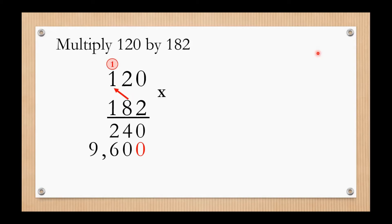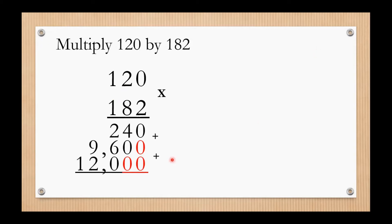Next, how many zeros do we write before solving the next row? Two. So, 1 times 0 equals 0. 1 times 2 equals 2. 1 times 1 equals 1. Now we add the partial products: 0 plus 0 plus 0 equals 0. 4 plus 0 plus 0 equals 4. 2 plus 6 plus 0 equals 8. 9 plus 2 equals 11, write 1 carry 1. Last, 1 plus 1 equals 2.